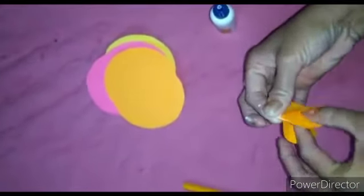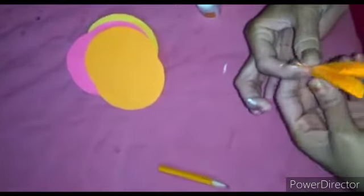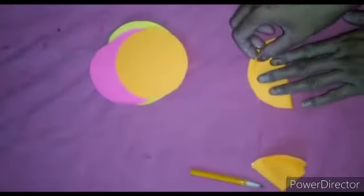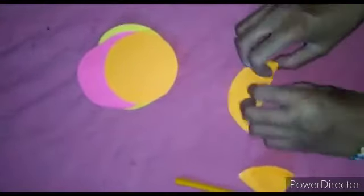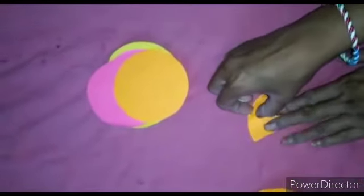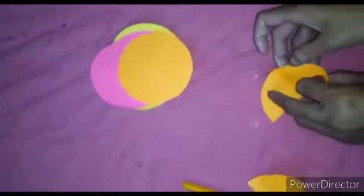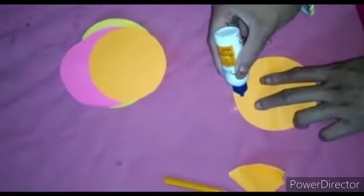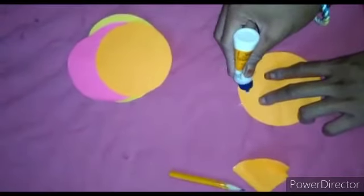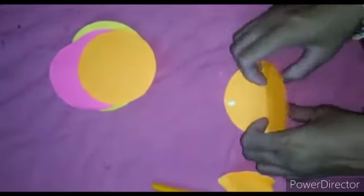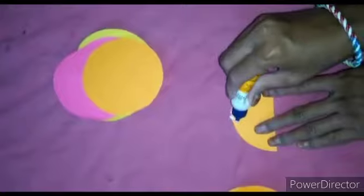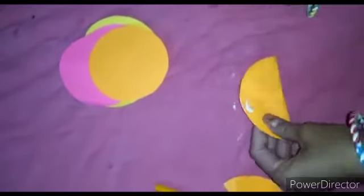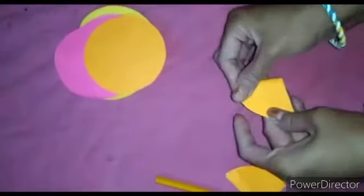Now this way we will stick all the pieces. One more time I show you. First fold it. Two foldings. Then open it. Then we will get this line. On that line apply glue a little bit only, then stick like this. After that apply a little bit of glue over here and again fold it like this.